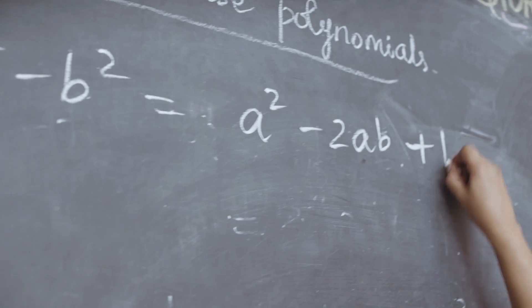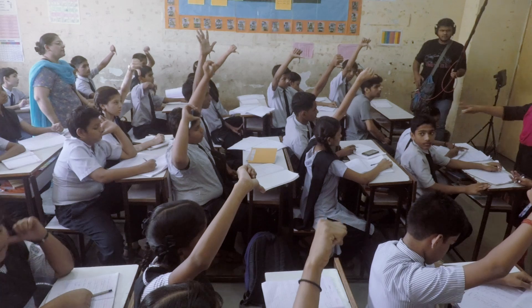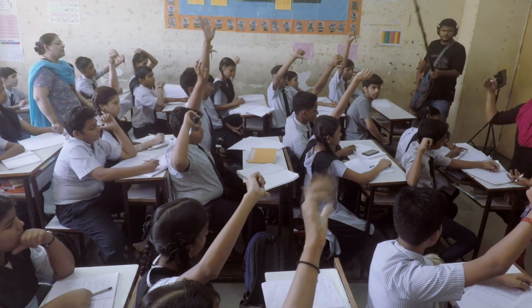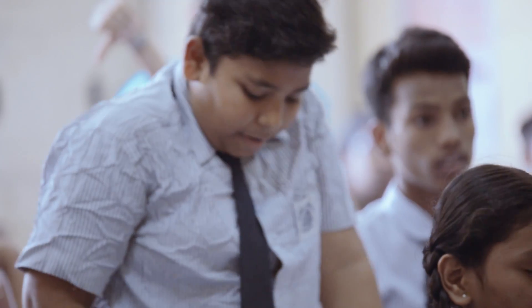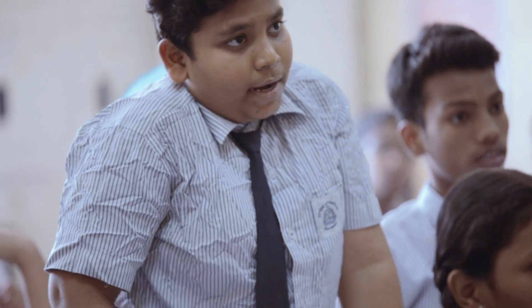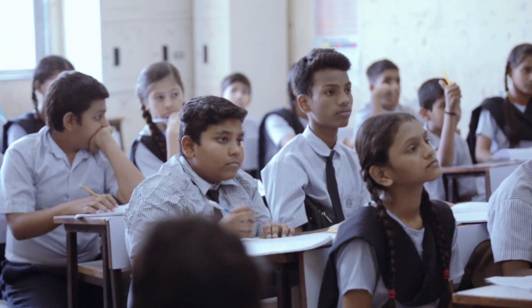Vivek, can you tell us the answer for this question? a squared minus 2ab plus b squared. Very good — a squared minus 2ab plus b squared. I see a lot of thumbs down from people. What is wrong? Rajesh: a squared minus b squared equals (a plus b)(a minus b). Very good — this one is wrong and this one is right.